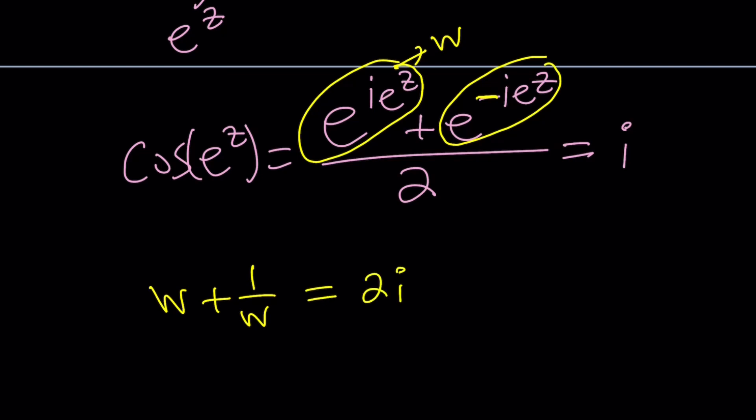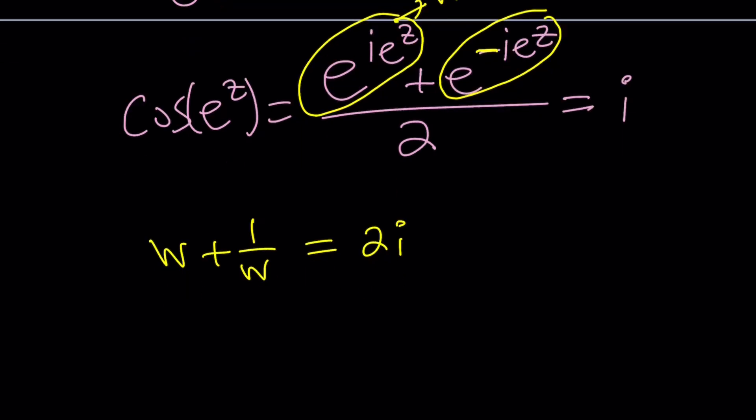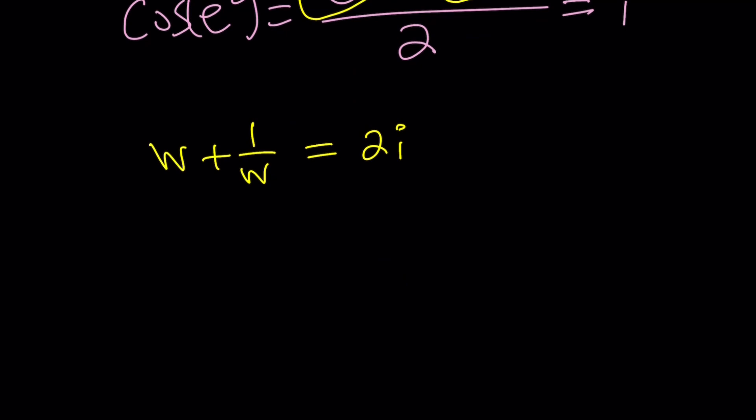That's going to give us 2i. Great. Now, you add a number and its reciprocal and you get 2i. How nice is that? Here's what we're going to do. We're going to solve this as a quadratic equation. Let's go ahead and multiply everything by w. w squared plus 1 equals 2iw. And then bring the 2iw to the left